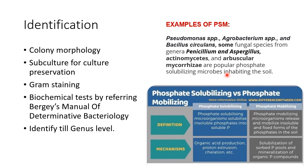A common viva question is: what is the difference between solubilization and mobilization? Phosphate solubilizing microbes convert insoluble phosphate to the soluble form. Mobilization means microbes release and mobilize insoluble and fixed forms of phosphate in the soil, making it available for plants to absorb. The mechanism for solubilization involves organic acid production, proton exclusion, and chelation, while mobilization involves solubilization of adsorbed phosphate pools and mineralization of organic phosphate compounds.